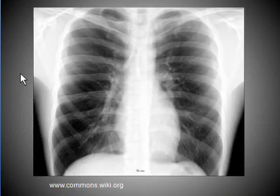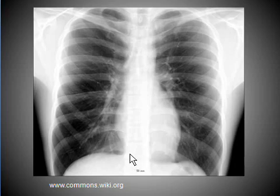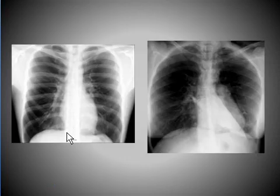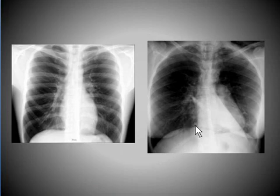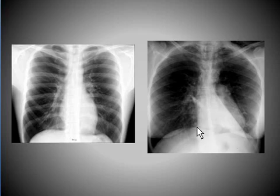This x-ray is a normal chest x-ray — the diaphragm is not continuous here; there is a break. These are the two x-rays side by side. The diaphragm is not continuous in the normal one, but you can see a thin line in the abnormal one, which is known as the continuous diaphragm sign.